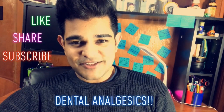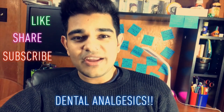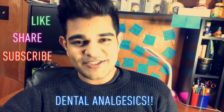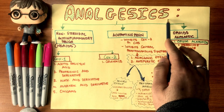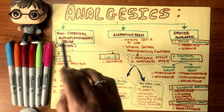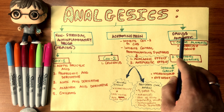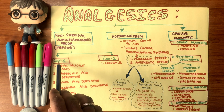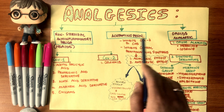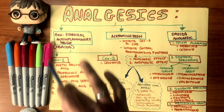Welcome, tooth doctors and doctresses at the tooth factory! Today we're going to learn about the analgesics used in dentistry — just a brief overview. Get your pens and papers out. The analgesics used in dentistry are classified into three sections: NSAIDs, acetaminophen, and opioid analgesics. NSAIDs are further divided into COX-1 (cyclooxygenase-1) and COX-2 blockers, while acetaminophen blocks cyclooxygenase-3.